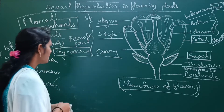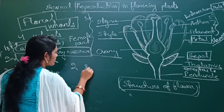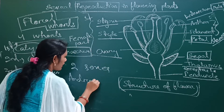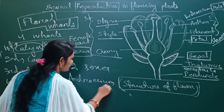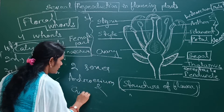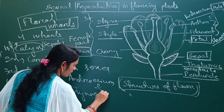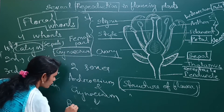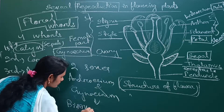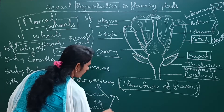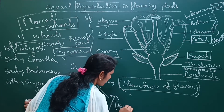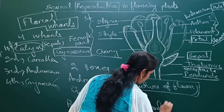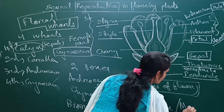If a flower contains two sexes — that means if it has both androecium and gynoecium parts — then that flower is called a bisexual flower, or hermaphrodite flower, or monoclinus flower.